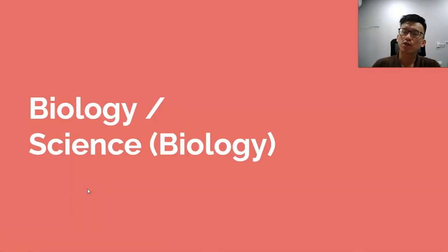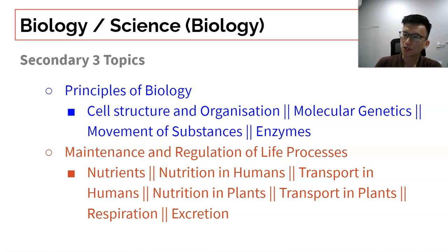The other choice other than physics is to choose pure biology or combined science biology. In Sec 3, you learn about the first fundamental principles of biology. The important foundations will be cells, genetics, enzymes, movement, diffusion, osmosis, and then we talk about how we regulate life processes through nutrition. There's a lot of focus on not just humans but also plants. You haven't seen much of plants in lower secondary science.